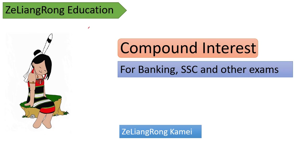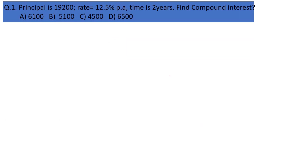Hello everyone, welcome to General Education. Today we're going to discuss compound interest. In the first question, the principal is 19,200, rate is 12.5% per annum, and time is 2 years. Find the compound interest.